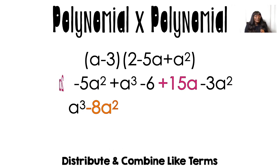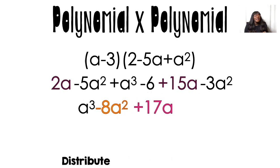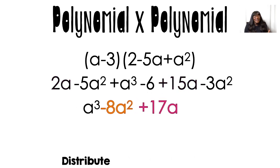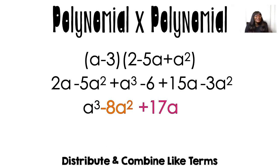Then I put everything in descending order — biggest exponent first. The a cubed comes first, then the squares combine, then the a's combine because they're like terms and they're family. Then that negative 6 doesn't have a buddy — it stays by itself — and that's my final answer.